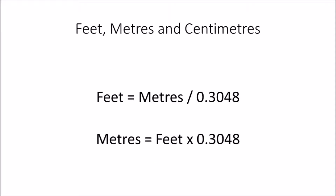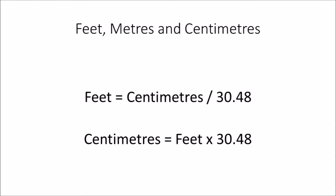In formula terms: feet = meters ÷ 0.3048, and meters = feet × 0.3048. If you remember these conversion factors, you can easily convert between the units. Similarly, feet = centimeters ÷ 30.48, and centimeters = feet × 30.48.